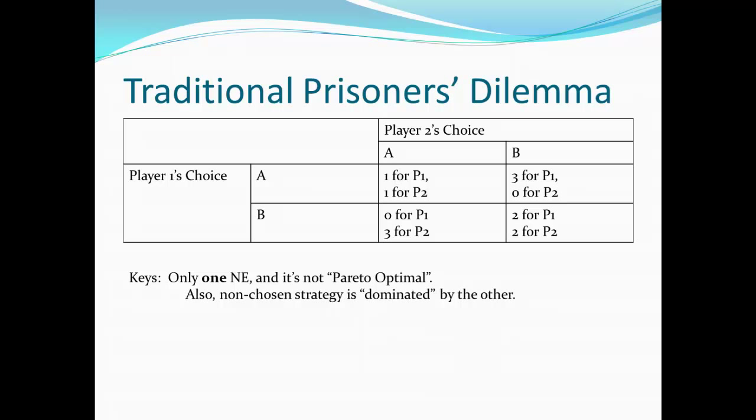If player 1 chooses A while player 2 chooses B, we're in row A, column B. That means player 1 would get 3, while player 2 would get nothing. Or we swap it: if player 2 plays A while player 1 plays B, player 1 gets nothing and player 2 gets 3.